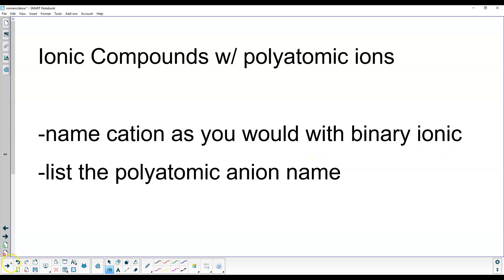That's a good place to stop. For practice, work on the first two pages of the nomenclature packet — binary ionic type 1 and binary ionic type 2. Both involve two elements, a metal and a non-metal. The difference is that on page 1 the metals have a fixed charge and you don't mention it, while on page 2 all metals are transition metals with variable charges, so you must include a Roman numeral to indicate the charge.